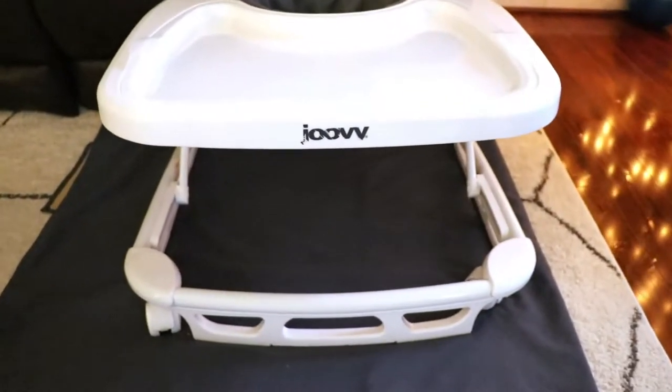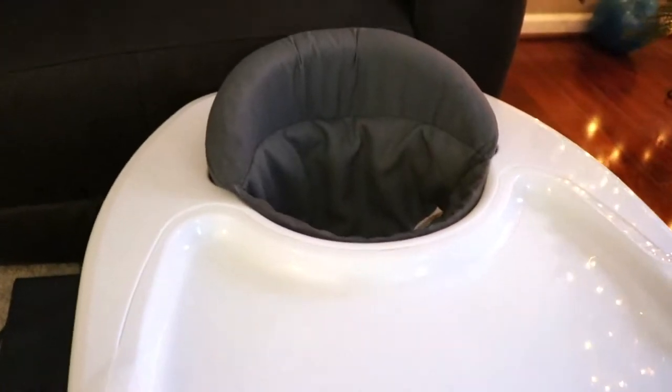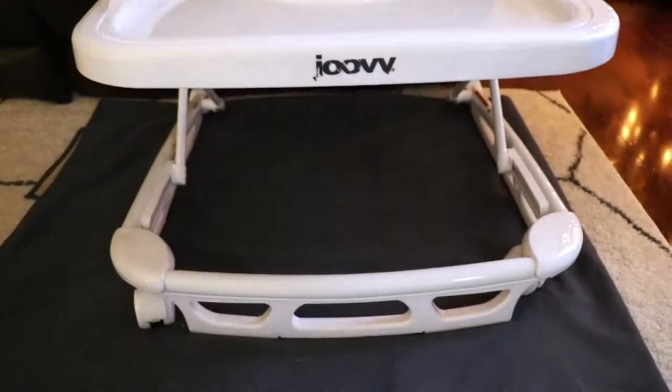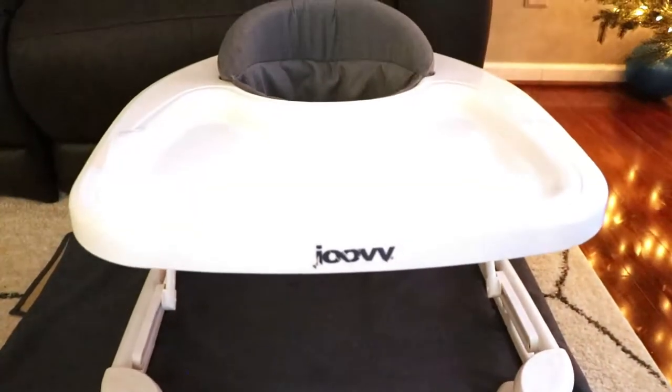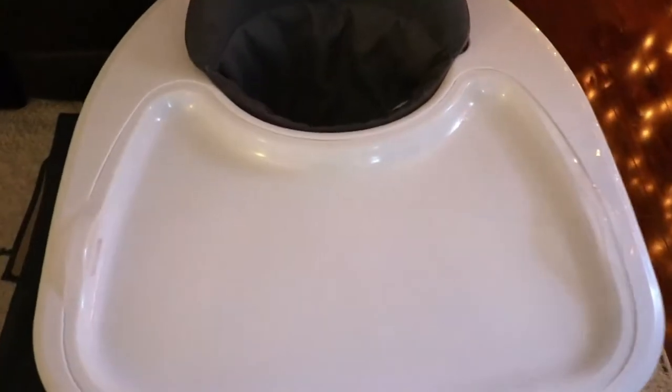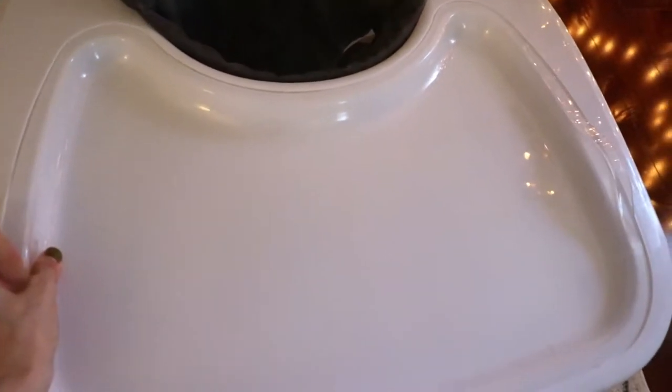Next is this Joovy walker. And I actually put this in the eating category because while he does have a booster seat that he could eat at the table, we often eat in the family room. And so he eats in the walker. So he's never actually used the walker for walking. He actually can walk independently, but he does use it to eat.